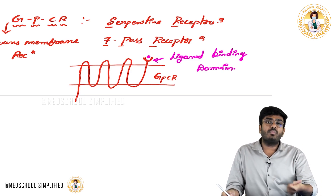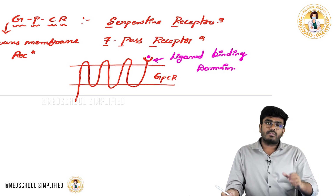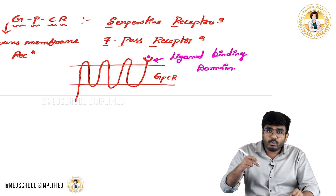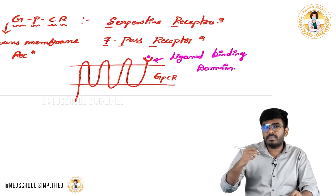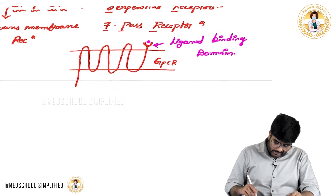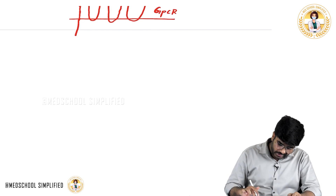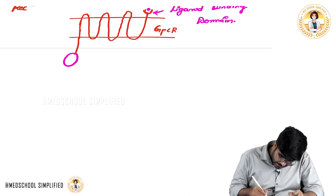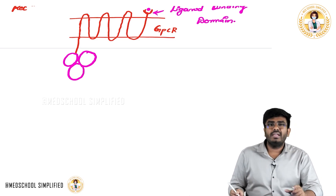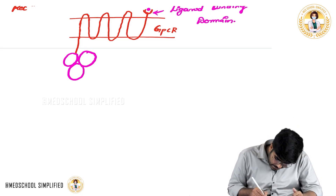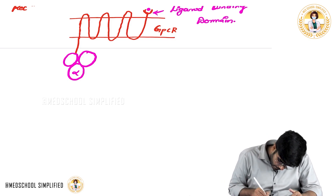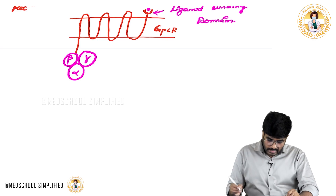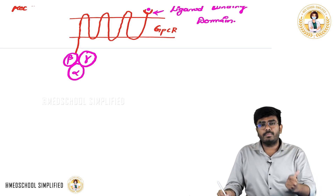For example, hormones derived from proteins cannot cross the cell membrane, so they act on a receptor present on the cell membrane. Protein hormones come and bind to this ligand binding domain and stimulate this receptor. Inside the cell, attached to the G protein coupled receptor are three subunits: alpha subunit, beta subunit, and gamma subunit.